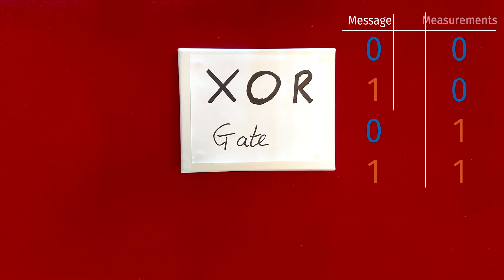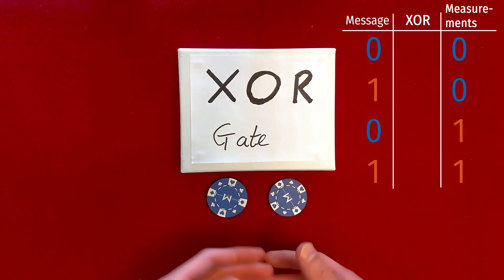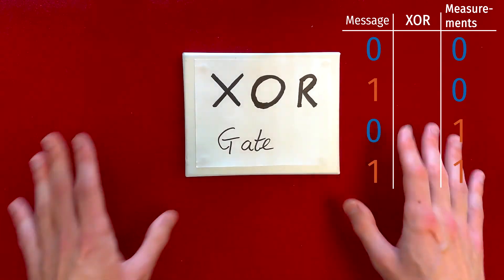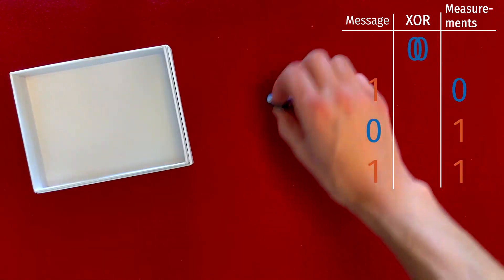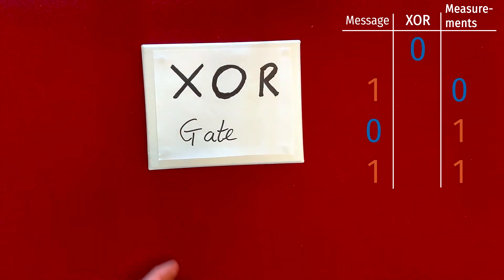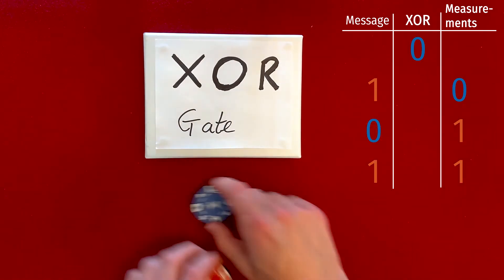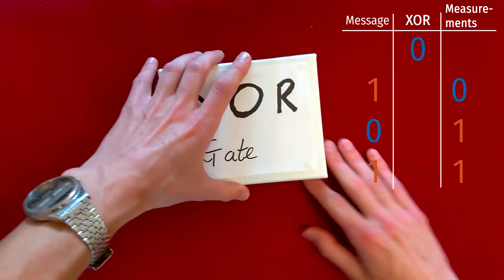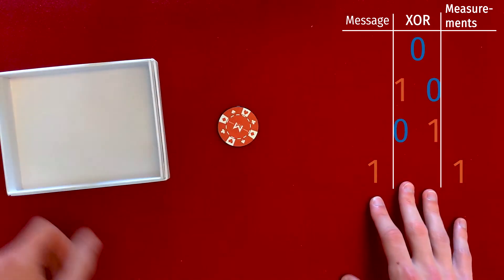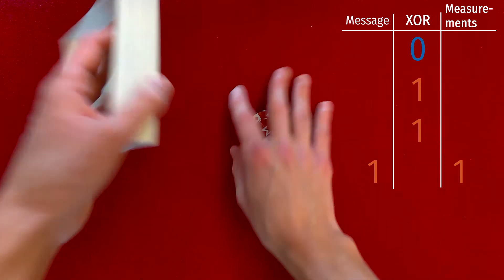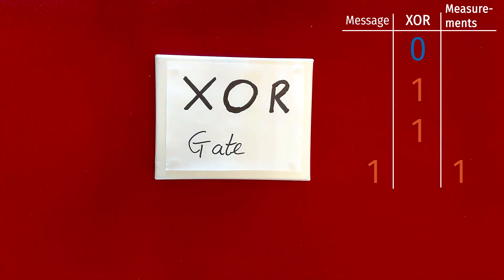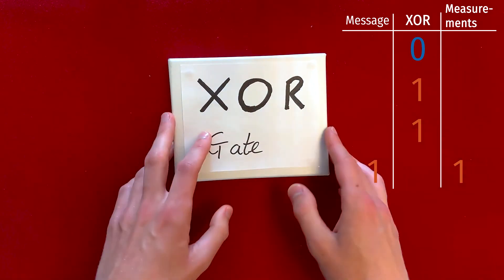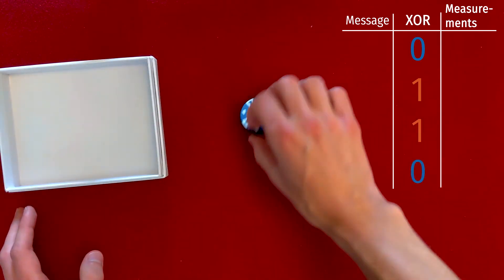An XOR gate is a fundamental operation in a digital computer. Take two zero measurements — if you put those inside the gate, the XOR gate would only allow out a singular zero measurement. If you take a one measurement and a zero measurement, or a zero and a one — the order doesn't matter — and put those inside the XOR gate, you get out a singular one measurement. Finally, if you take a set of one measurements and put those inside the XOR gate, you get out a singular zero measurement again.